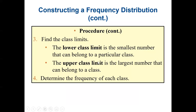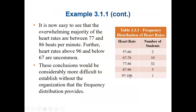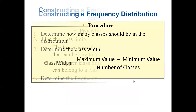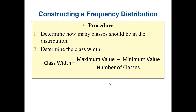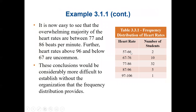Now, to construct the table, we need to identify the lower class limit and upper class limit. The lower class limit is the smallest number that can belong to a particular class, and the upper class limit is the largest. After that, we determine the frequency of each class by counting how many values fall in each category — for example, between 57 and 66 we have 2, then 10, then 32, and so on.